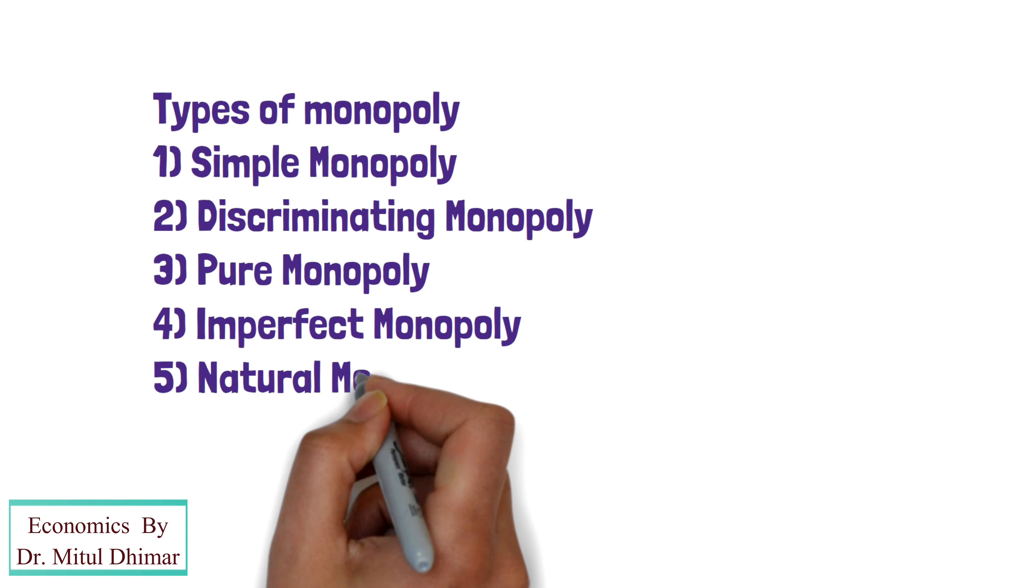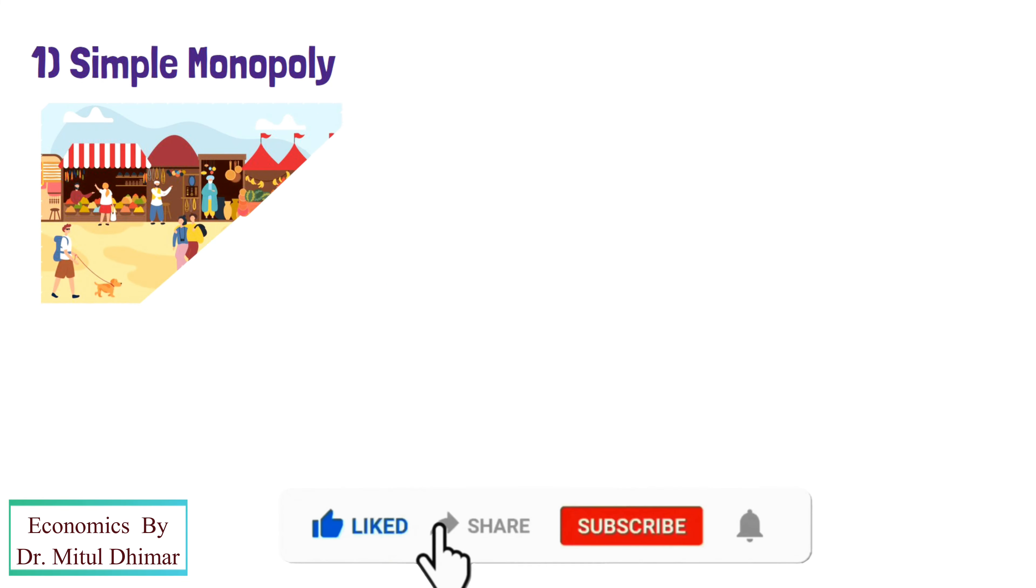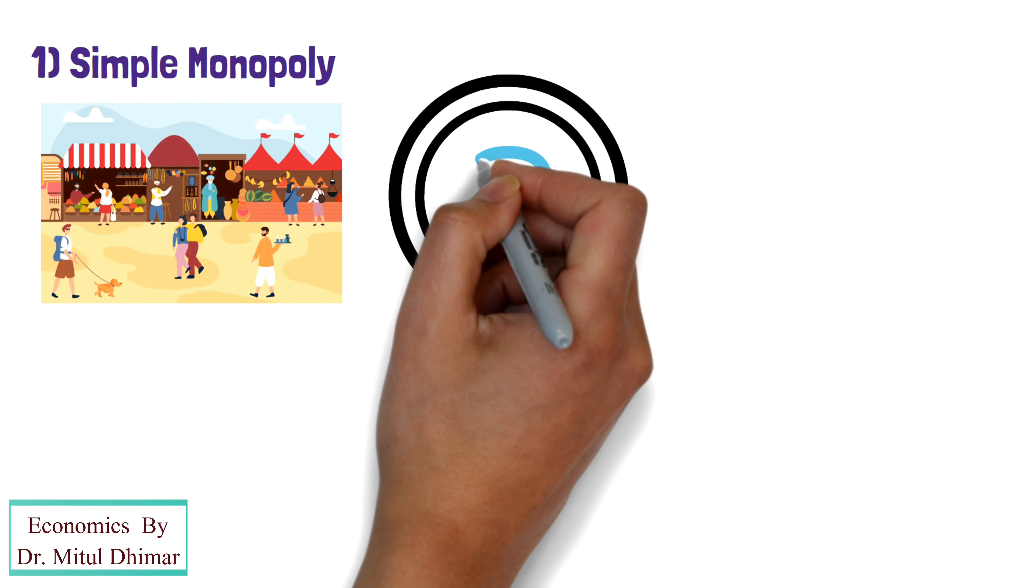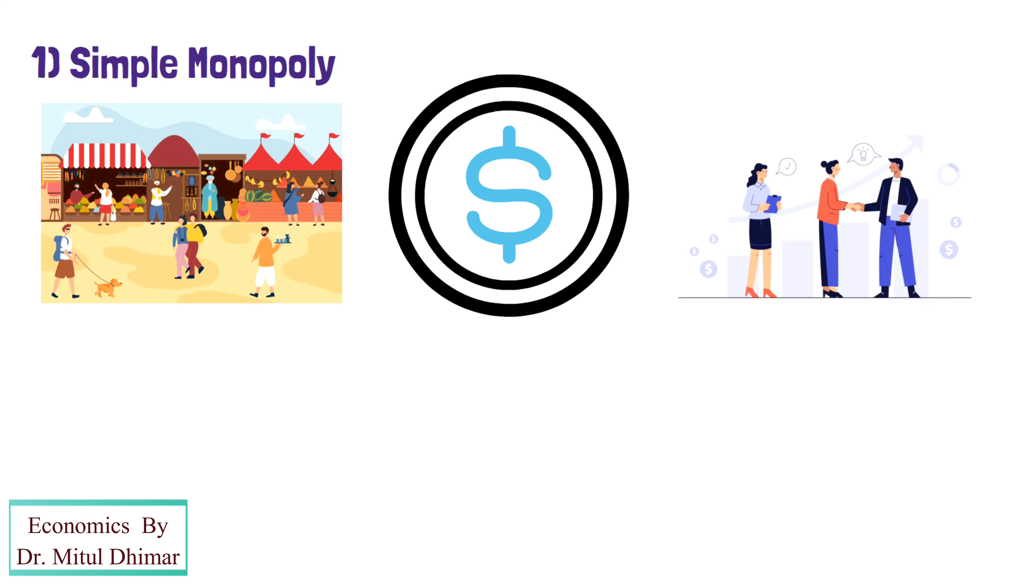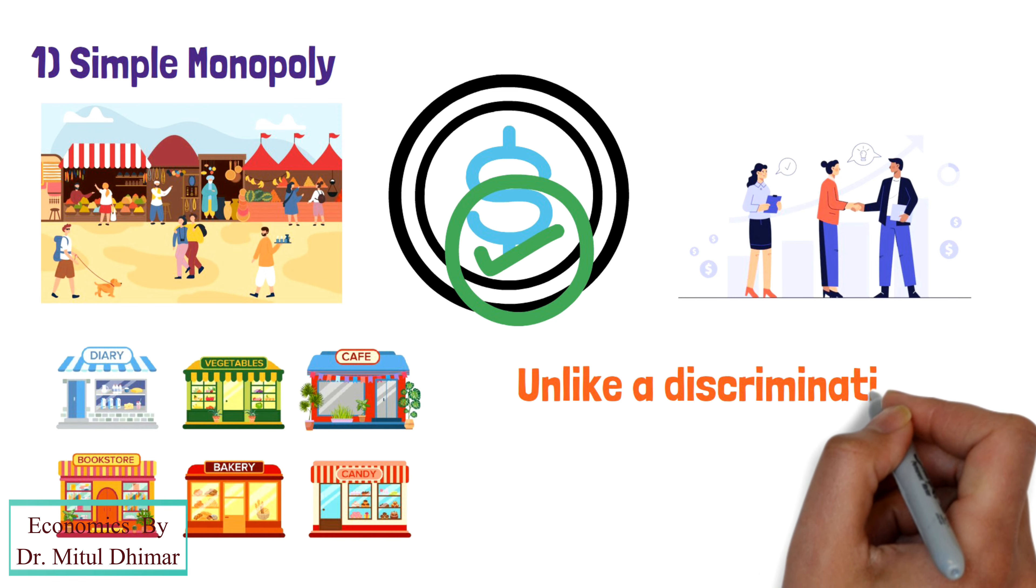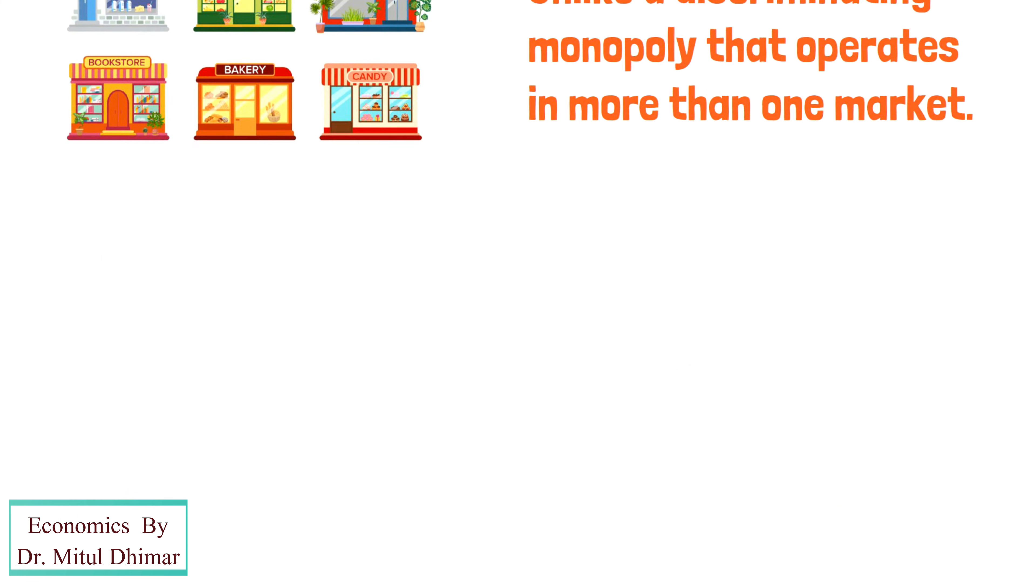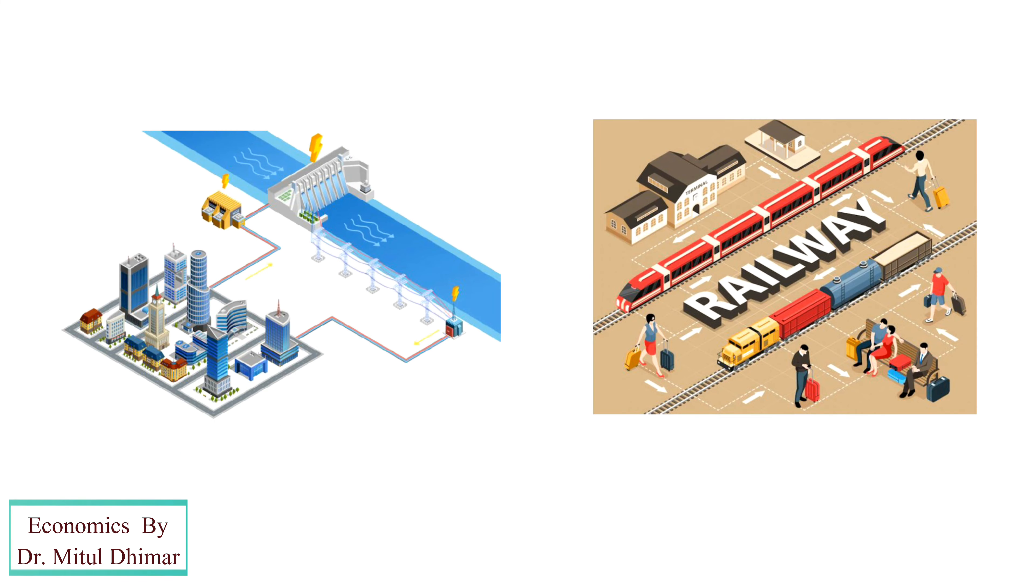I have included 7 types of monopoly in my video. 1. Simple monopoly. This is one of the monopoly market structures. Here, a simple monopoly firm charges a uniform price for its products when selling to all its buyers. A simple monopoly operates in a single market with a single price, unlike a discriminating monopoly that operates in more than one market. Examples: water supply, railway services, etc.